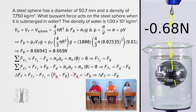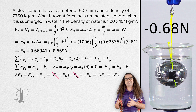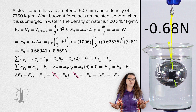We forgot about the string. The string displaces a very small amount of water and has a very small buoyant force acting on it, which increases the measured buoyant force by a small amount. But why not use three sig figs? That is a fair question — the force sensor is not very accurate past the hundredths place during this measurement.